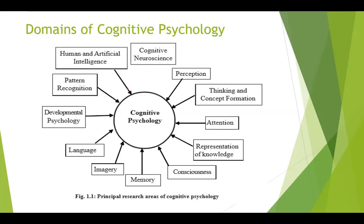The domains of cognitive psychology include: cognitive neuroscience, perception, thinking and concept formation, attention, representation of knowledge, consciousness, memory, imagery, language, developmental psychology, pattern recognition, and human and artificial intelligence.